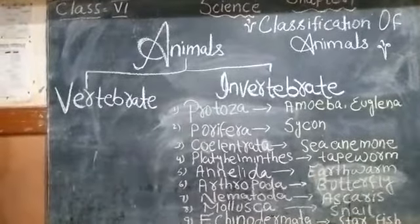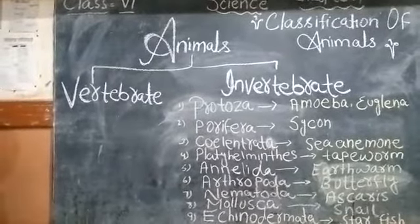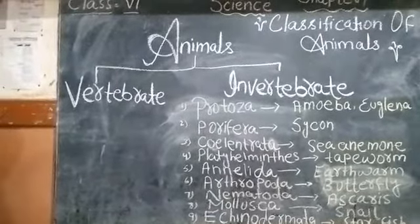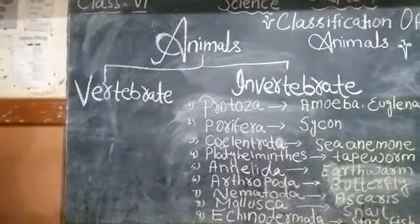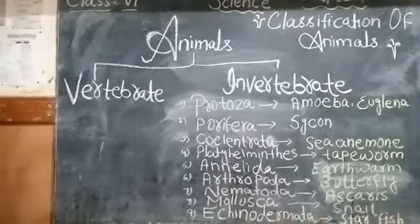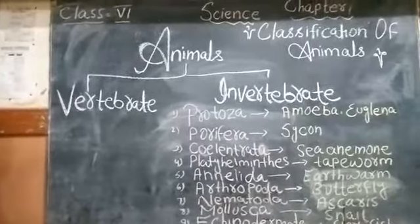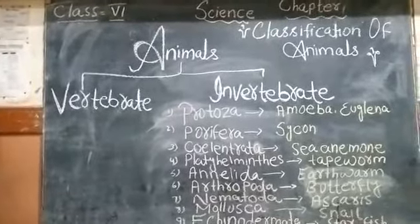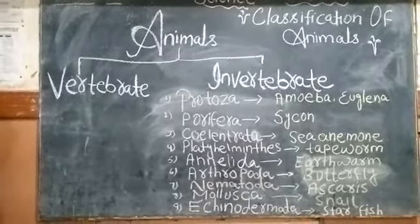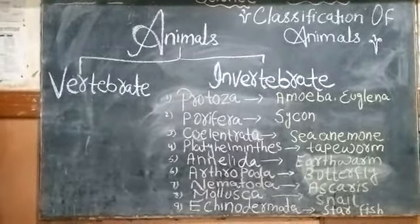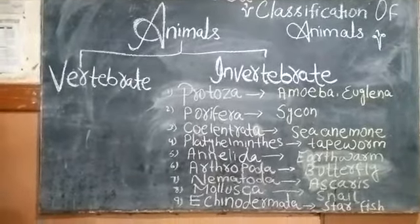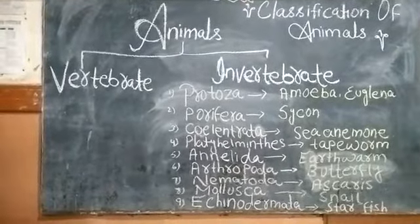Number 6: Phylum Arthropoda. Animals in this group have jointed legs and segmented bodies. This is why they are called Arthropods. Examples include Mosquito and Butterfly.